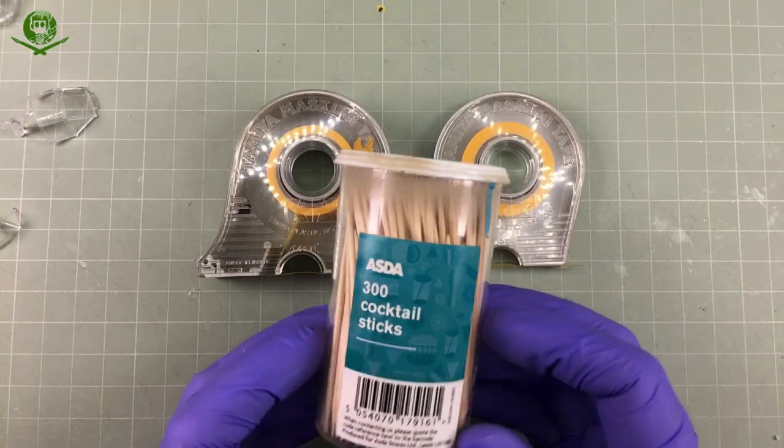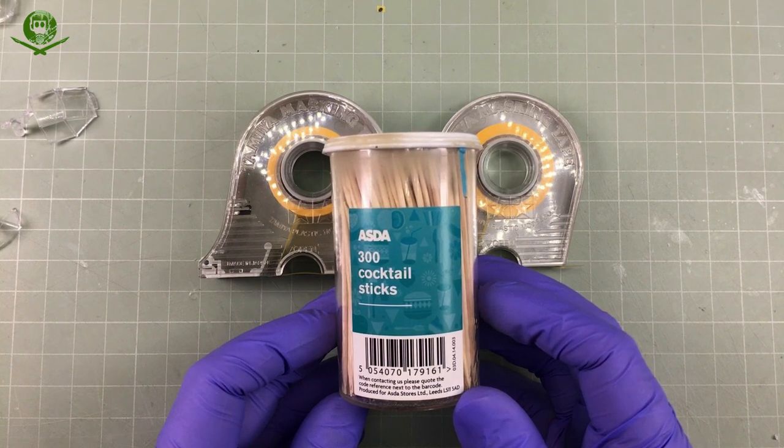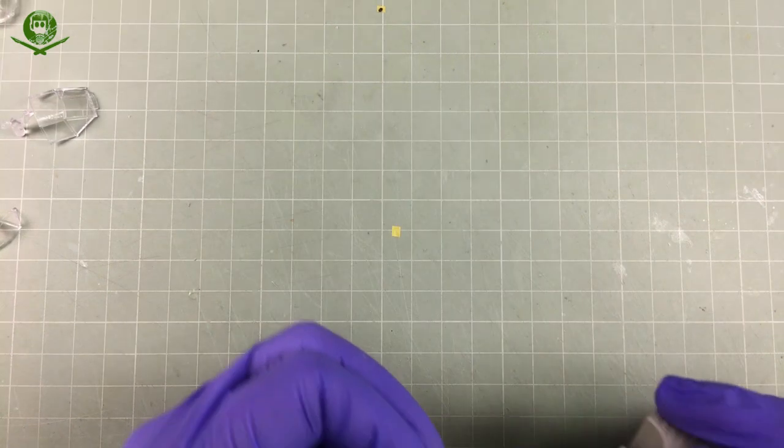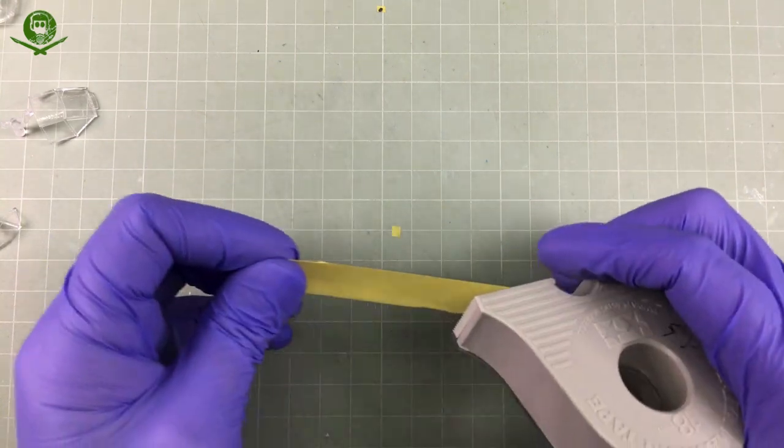The next step requires low-tack masking tape, a cocktail stick and a cotton bud that I forgot to show here. De-tack the tape to remove any excess glue by repeatedly sticking it to the bench.